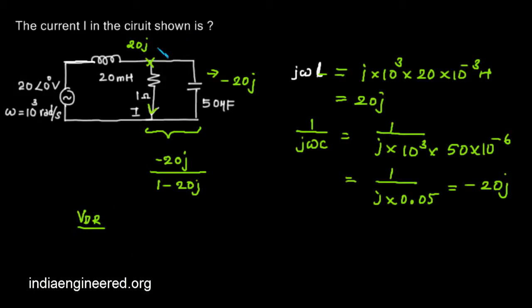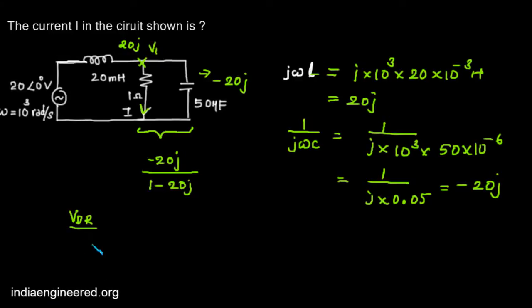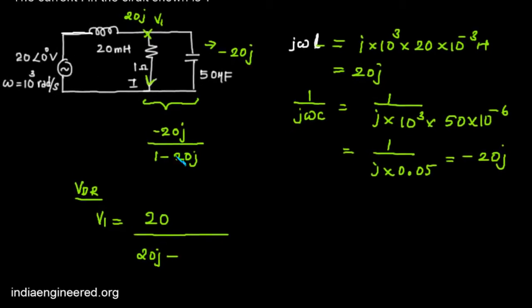So now by this voltage divider rule we can find out what is the potential. The potential here, let's say this potential be V1, and V1 will be equal to: we have 20 divided by what is the total resistance, that is 20j plus...